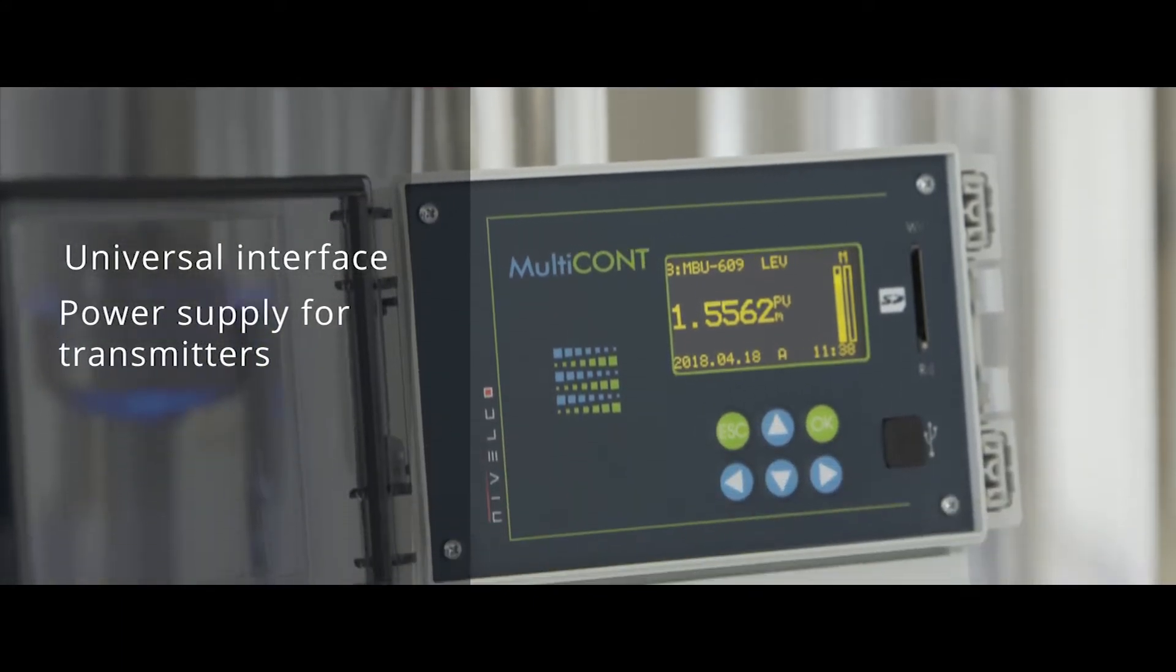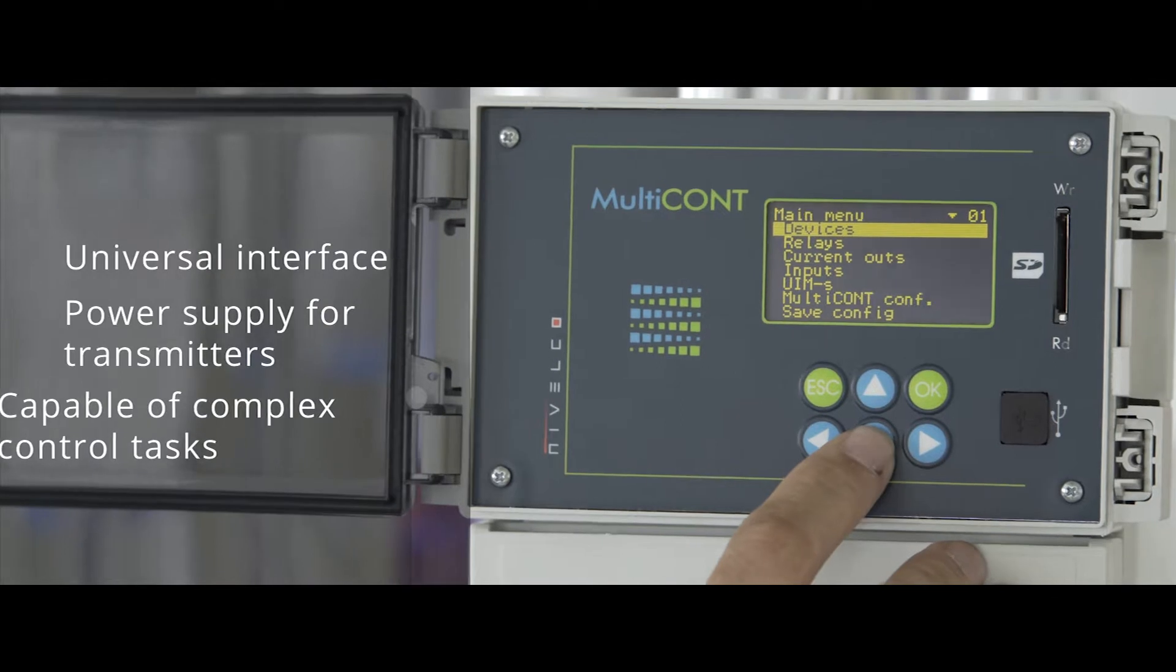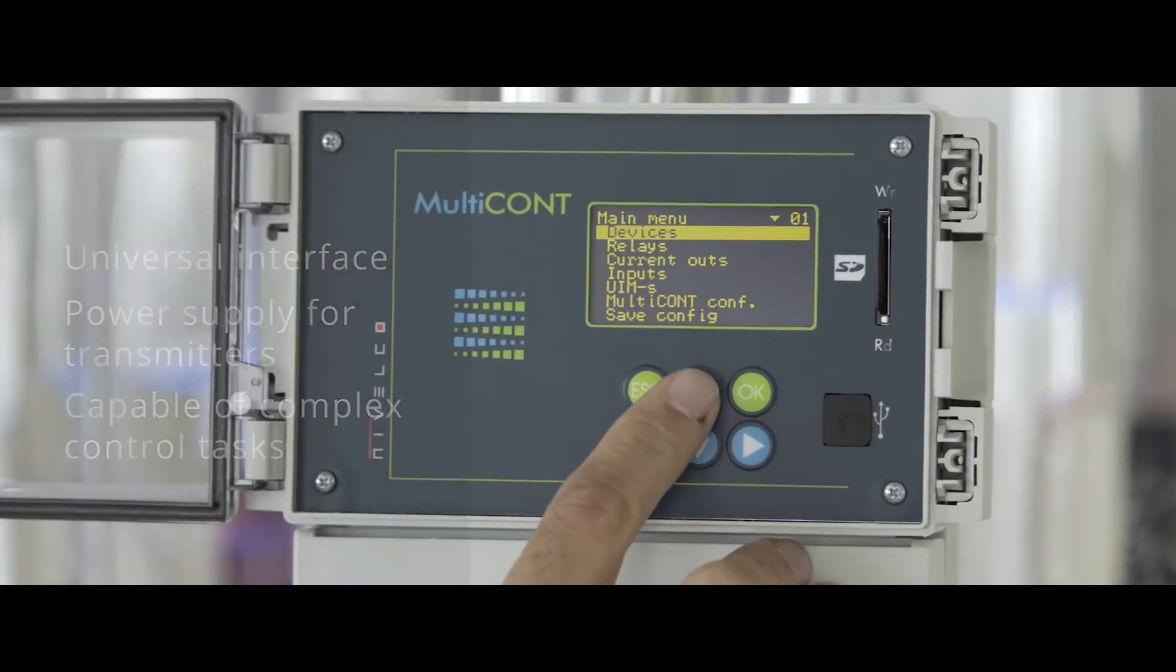Besides its role as an interface, Multicont ensures the powering of up to 15 two-wire transmitters while being capable of complex control tasks.